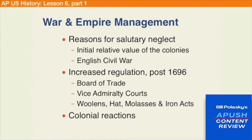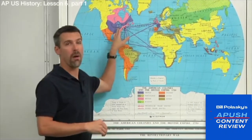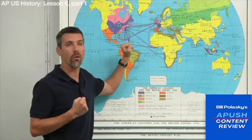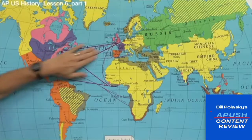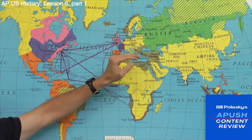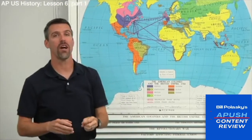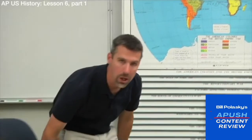They pass a series of acts — the Woolens, Hat, Molasses, and Iron Acts — all of which forbid the colonials from producing those items. Because if the colonials could not make them, they would have to buy them. And who would they buy them from? England. This translates into the two-way trade model the English were devoted to: all raw materials shipped to England, converted into more valuable finished goods, then shipped back to sell to the colonials at a markup and profit. England is trying to make this an airtight system so that all revenue heads back to them.